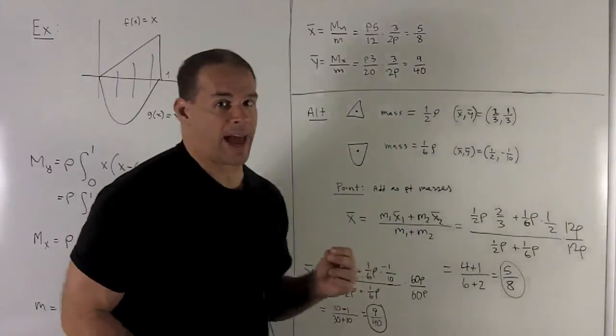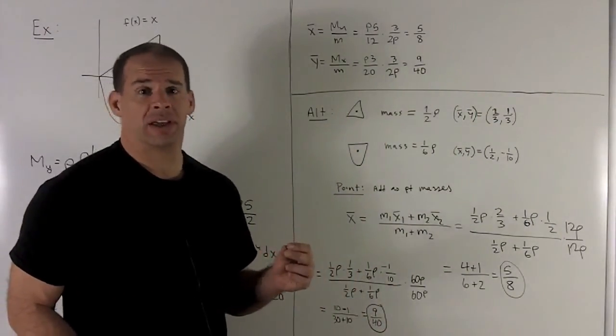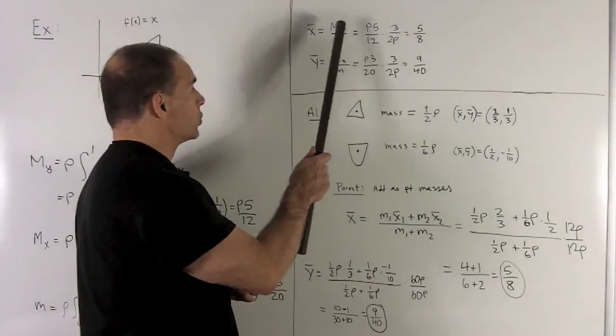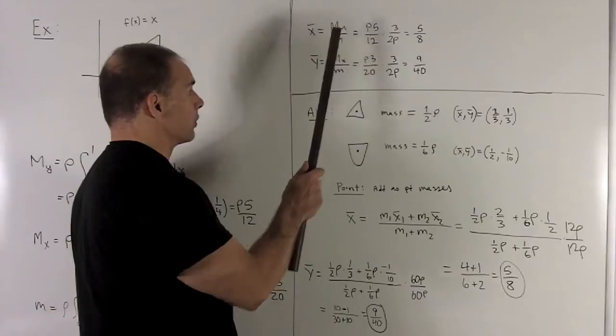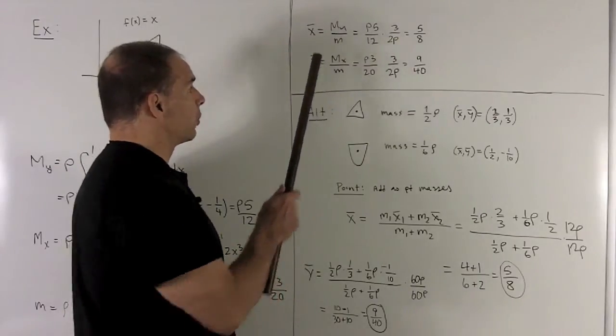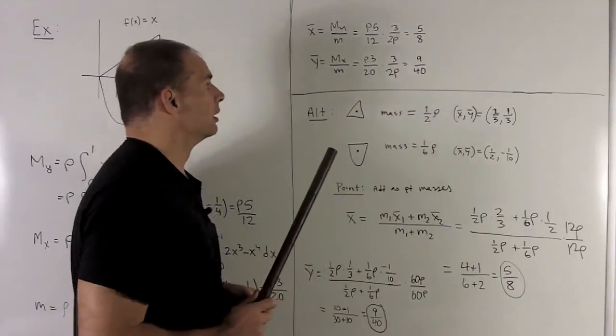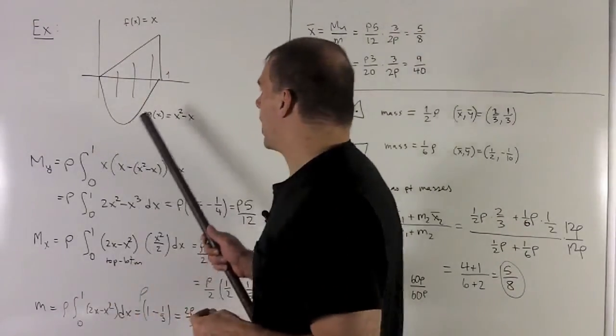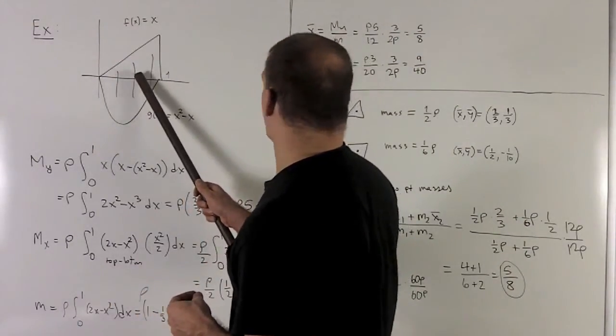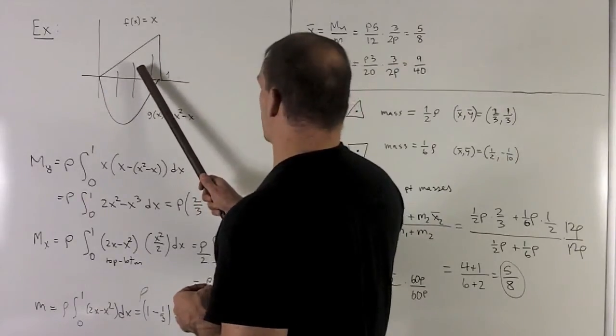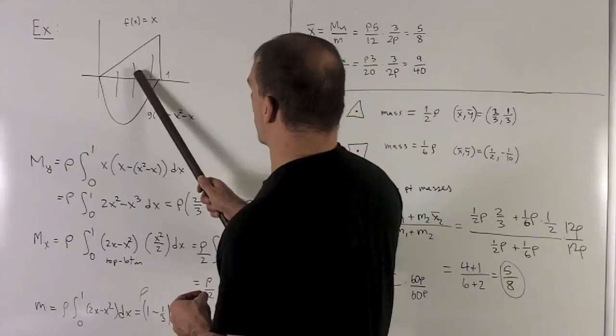To get the center of mass, we just take the moments and divide by the total mass. So remember, x bar goes with the opposite, so it goes with the moment for y. And so we're going to get a 5 eighths, and for y bar, I'm going to get 9 over 40. So this is going to be somewhere, 5 eighths is going to be a little bit over a half, and then 9 over 40 is going to be about one quarter. So it's somewhere around here.